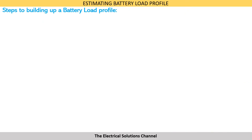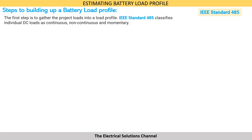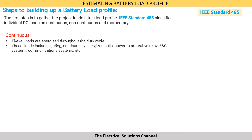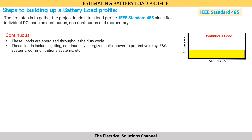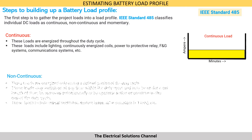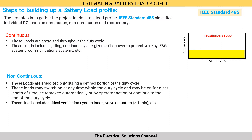Let us now understand the steps for building a battery load profile. The first step is to gather the project loads into a load profile. IEEE 485 classifies individual DC loads as continuous, non-continuous, and momentary. Continuous loads are those which are energized throughout the duty cycle — these include lighting, continuously energized coils, power to protective relays, SCNG systems, and communication systems.